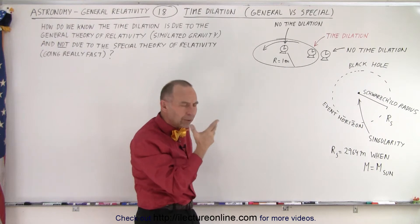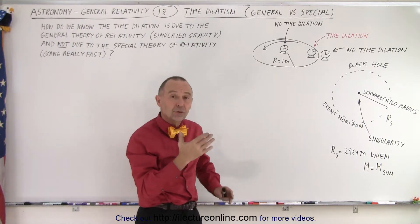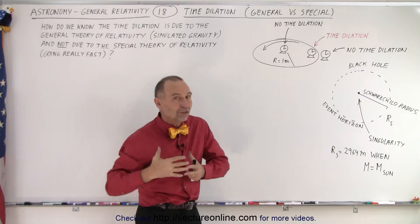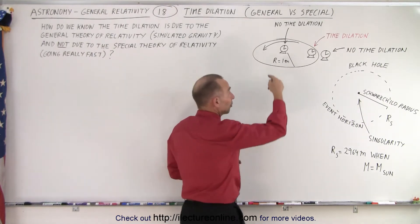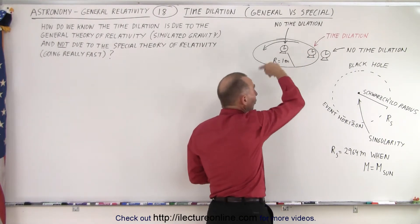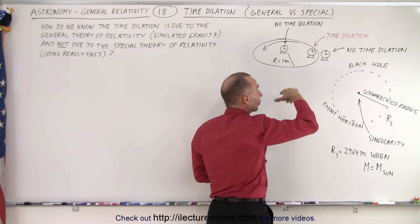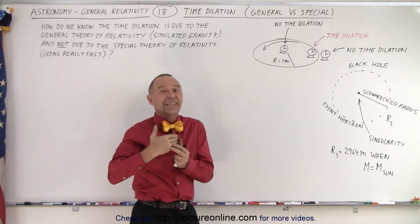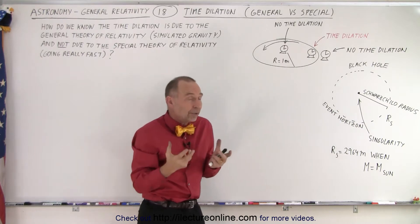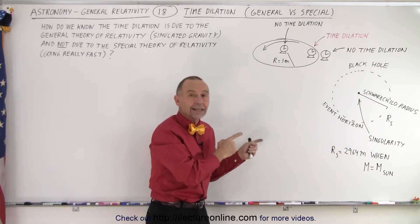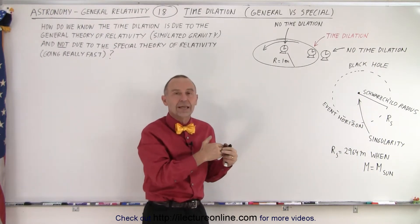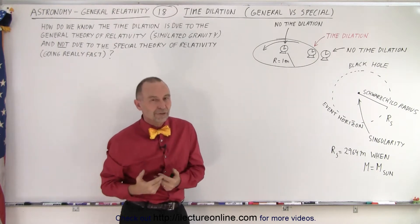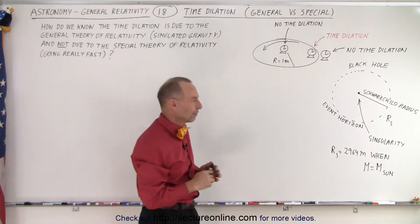How do we know that it's due to the simulated gravity that time is slowing down, and not because of the effects of moving really fast? Moving around a circle requires enormous velocity, and we also know there's time dilation as objects get close to the speed of light. So how do we know this is due to gravity and not the special theory of relativity? Let's try to figure that out.